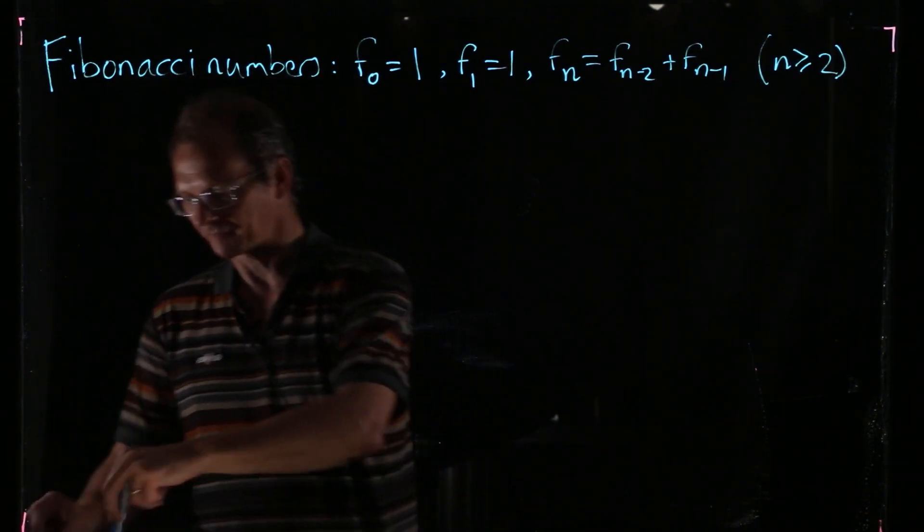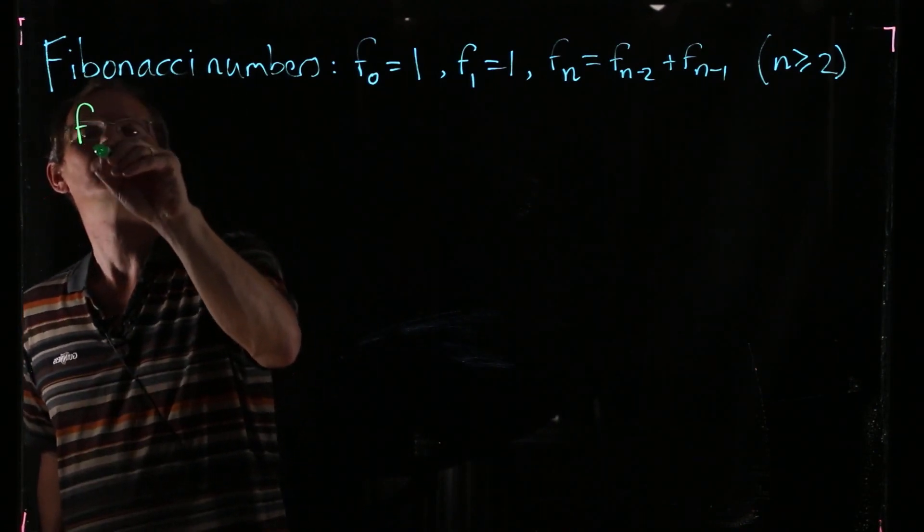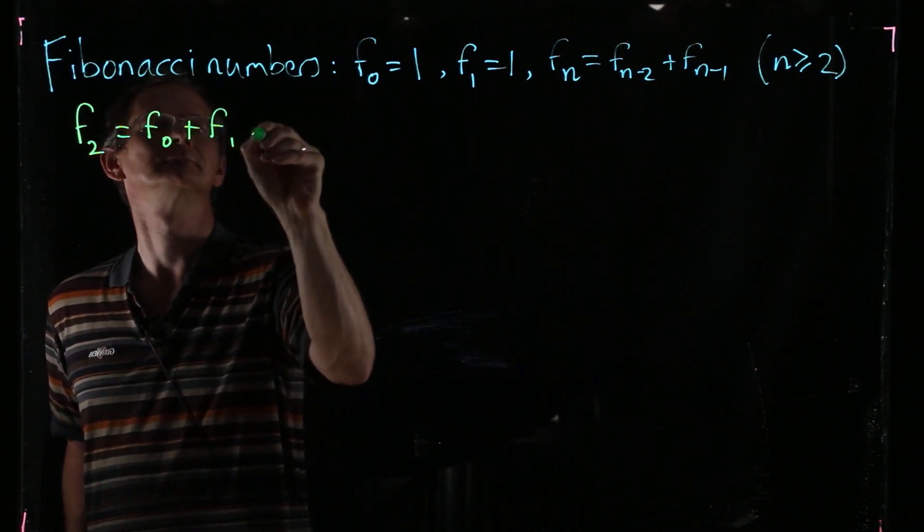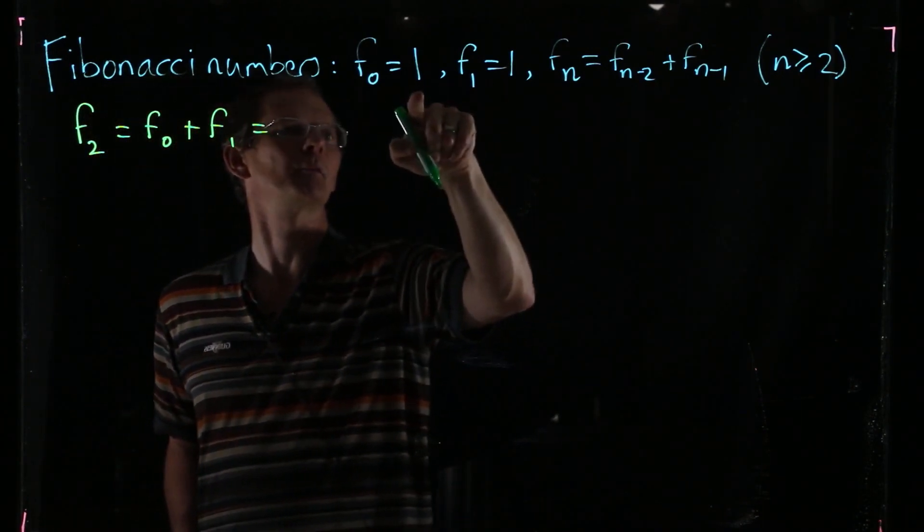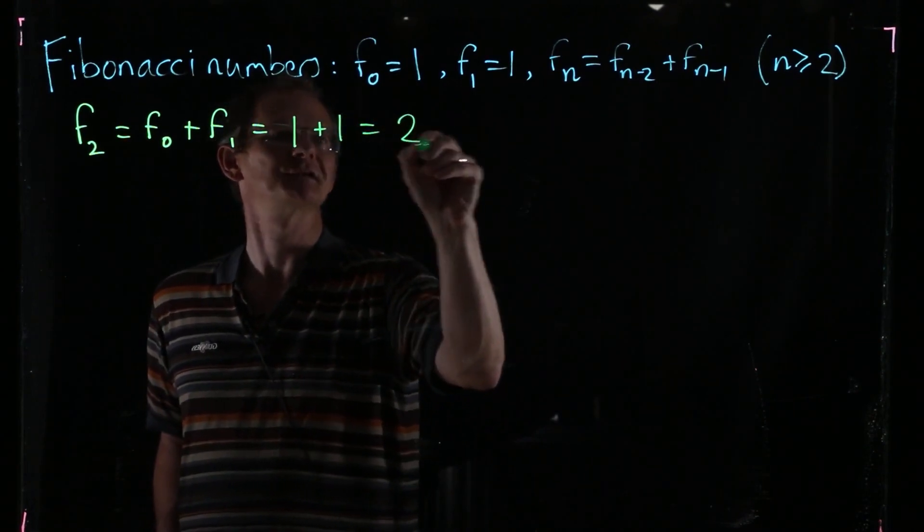So let's see how that works out for the first few cases. F2 is F0 plus F1. F0 is 1 and F1 is 1, so that's 1 plus 1, which is 2.